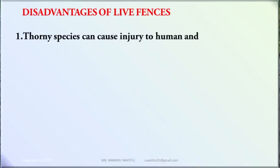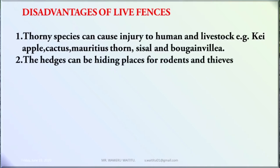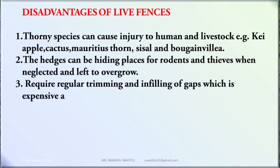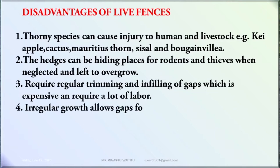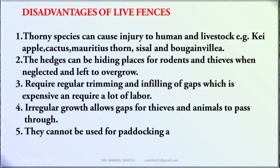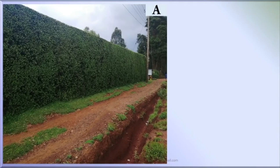The disadvantages of life fences: Number one, some species can cause injury to humans and livestock — for example, Kayeepo, Cactus, Mauritius Stone, Saiso, and Bougainvillea. Number two, the hedges can be hiding places for rodents and thieves when neglected and left to overgrow. Number three, they require regular trimming and infilling of gaps, which is expensive and requires a lot of labour. Number four, irregular growth allows gaps for thieves and animals to pass through. Number five, they cannot be used for paddocking as they use up a lot of space. And number six, they take many years to establish and be effective.